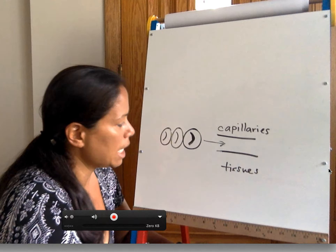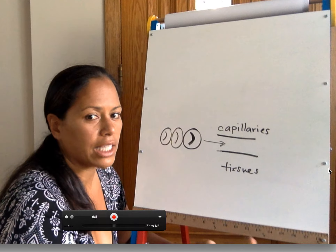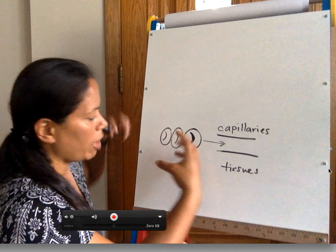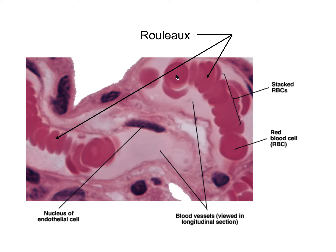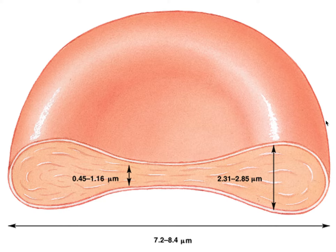How I remember it is there's a caramel-covered chocolate candy called Rolos, and it has this similar stacking shape. These are your rouleaux — they stack one on top of each other, they're flexible, and they can fit through the capillaries to get oxygen to the tissues and back through the other blood vessels. The most abundant cell in the blood is the red blood cell, with its biconcave disc shape.